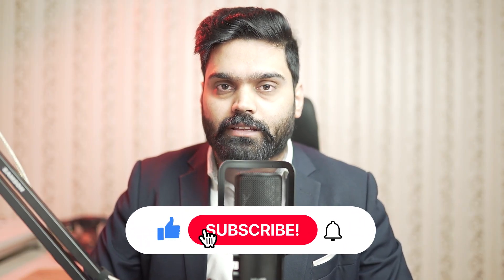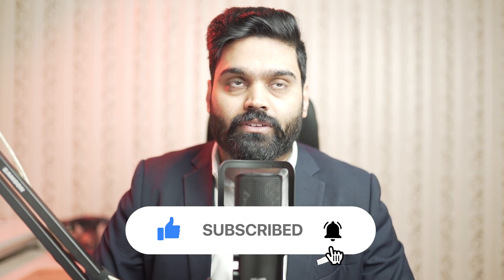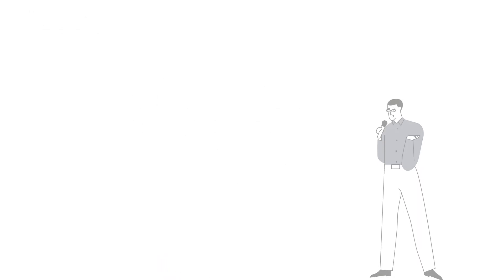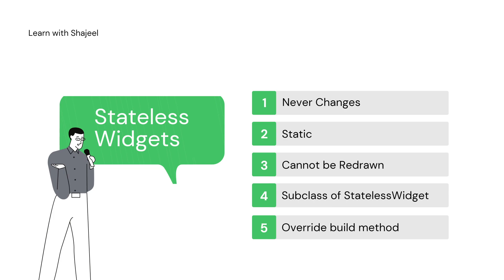Let me tell you the difference between stateless and stateful widgets in a presentation, and after that we are going to take an example in code as well. A stateless widget is something that never changes — it is basically a static thing and does not need to be redrawn. It is a subclass of the StatelessWidget class and it overrides one method, which is the build method.